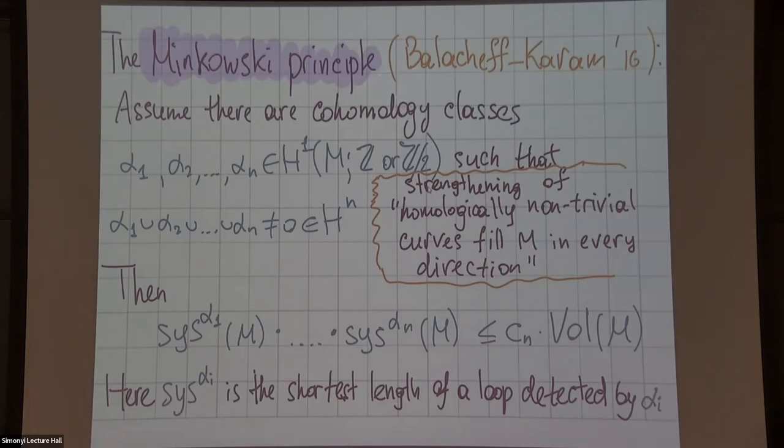The name Minkowski principle metaphorically refers to the second Minkowski inequality about lattice points. It's true for Finsler manifolds and for flat Finsler tori it's approximately the same as Minkowski's second theorem. Detected by alpha just means that it is in the homology of M. I minimize over the loops such that I can evaluate alpha from those loops and get non-zero.